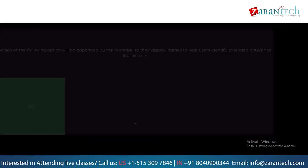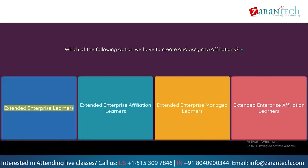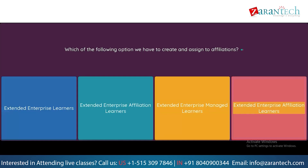Question: Which of the following options do we have to create and assign to affiliations? Option 1: Extended Enterprise Learners. Option 2: Extended Enterprise Affiliation Learners. Option 3: Extended Enterprise Managed Learners. Option 4: Extended Enterprise Affiliation Learners.